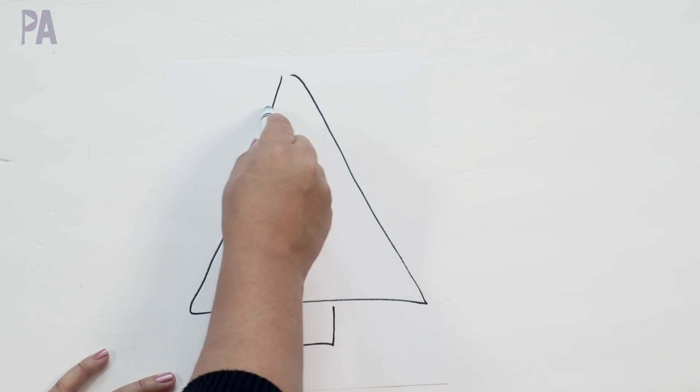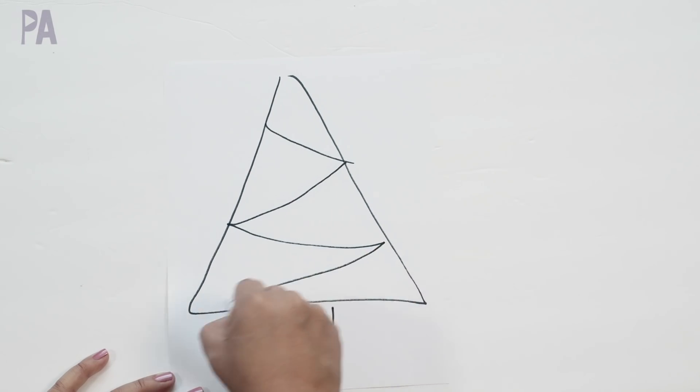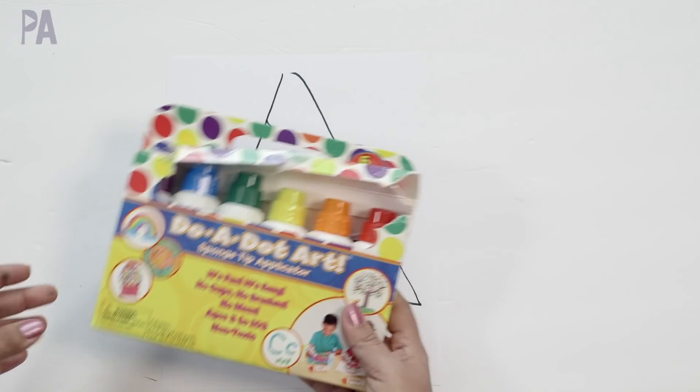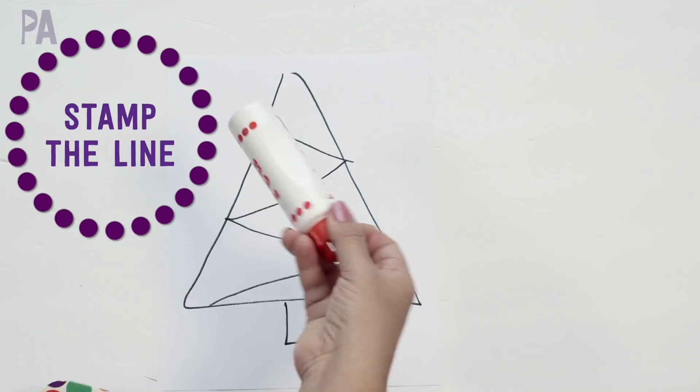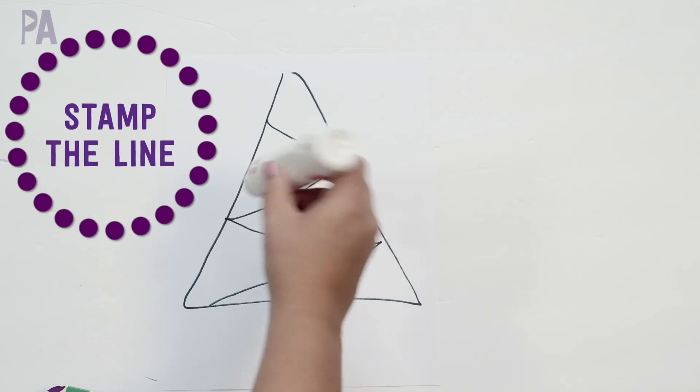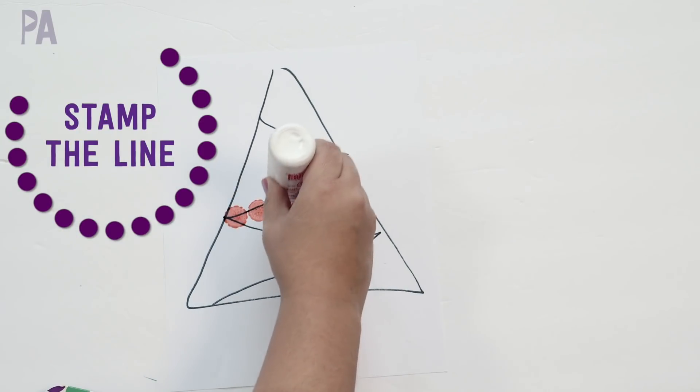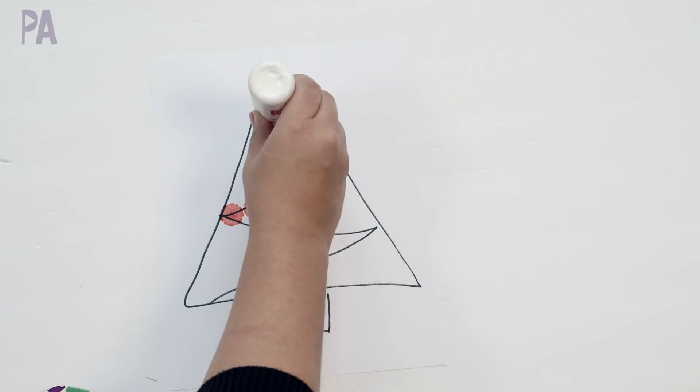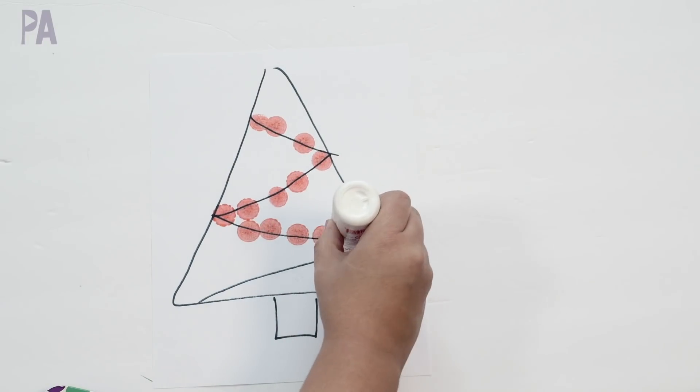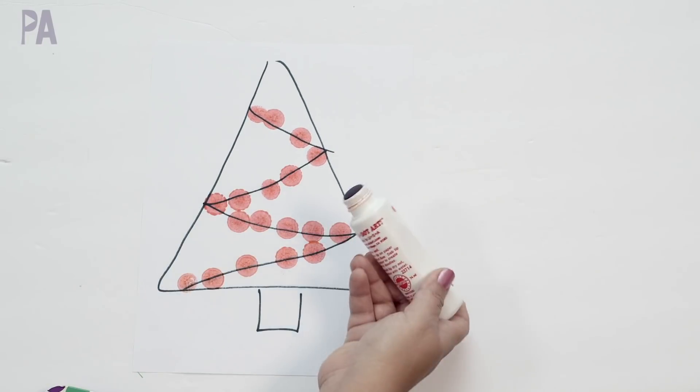Another great option is just to use a piece of paper, draw some garland on, and then you can bring out your duo dot markers. I love these. You can even do the whole tree green if you want, but basically dotting all the way across the line or using different colors. It just gives it a lot of fun. I love the duo dot markers.